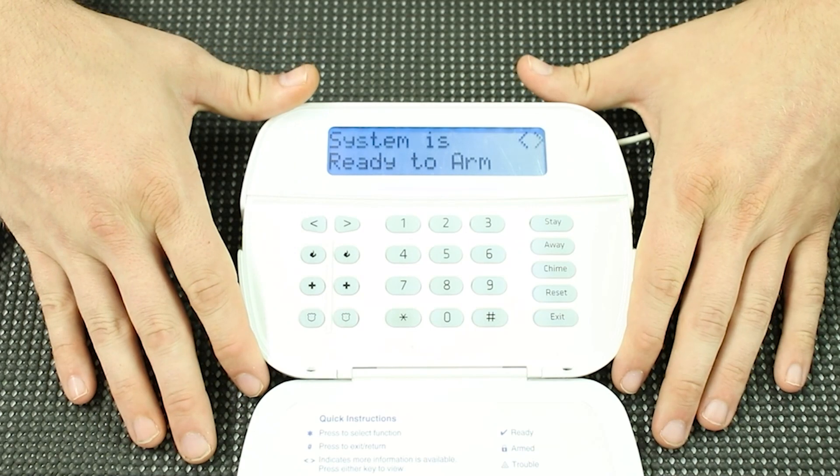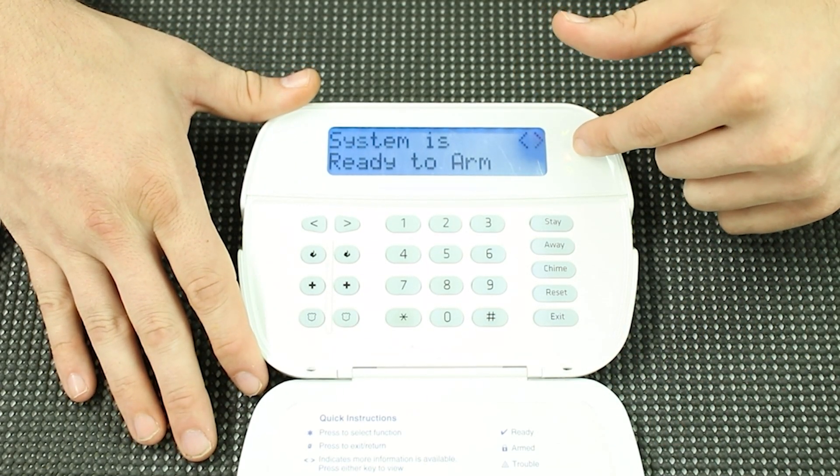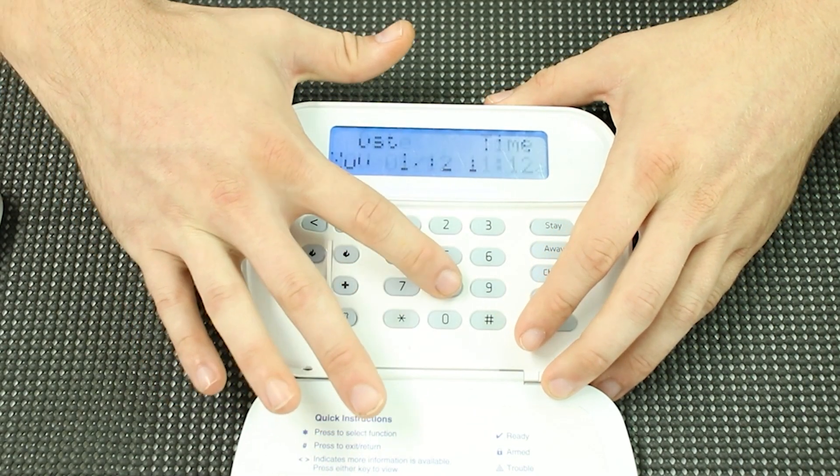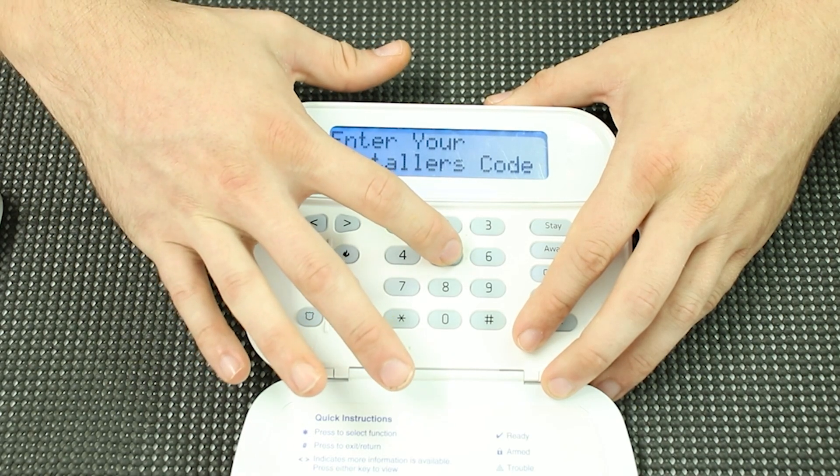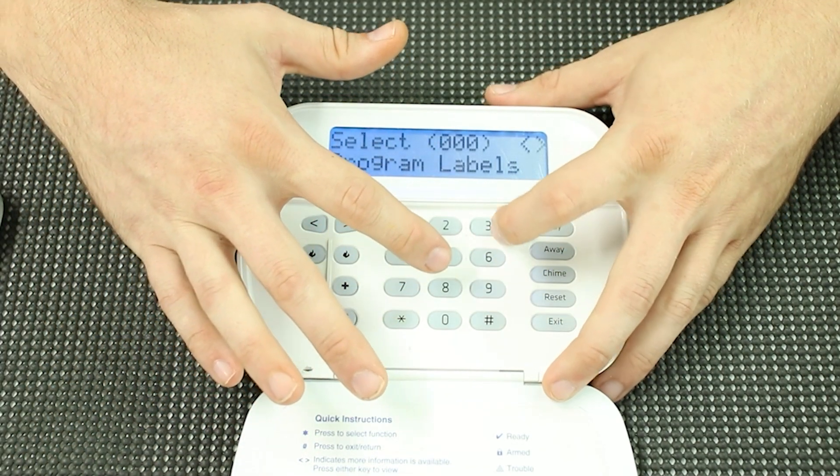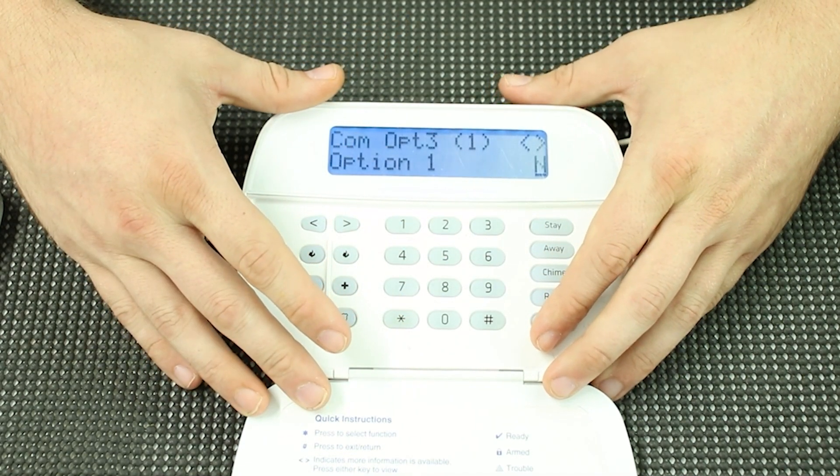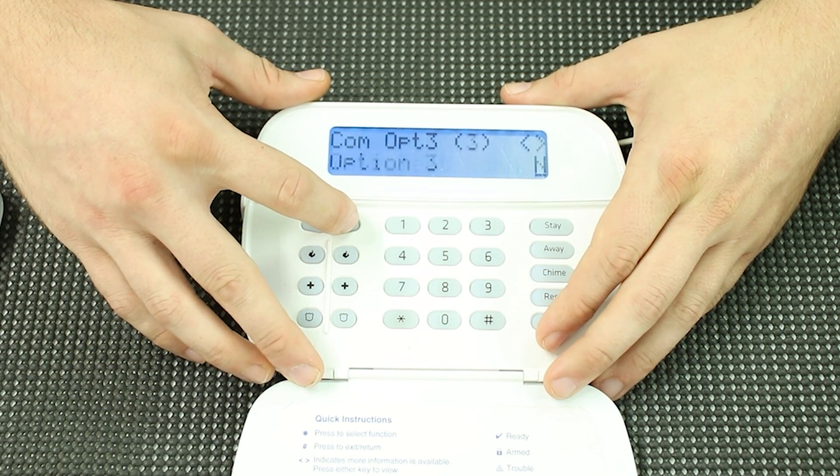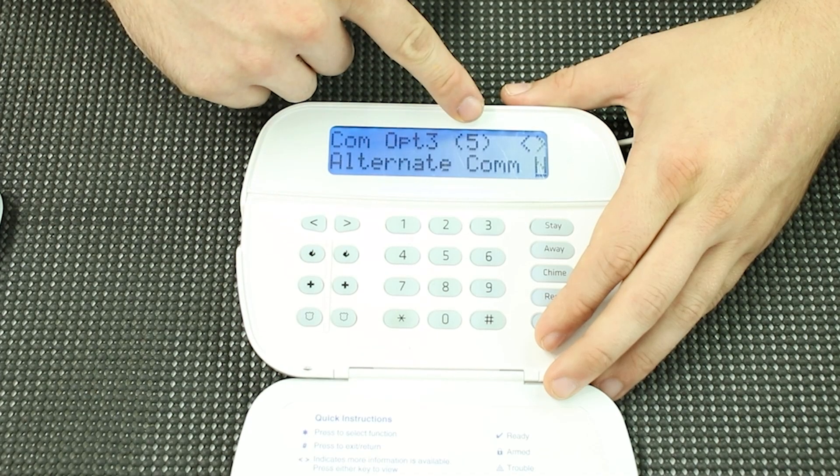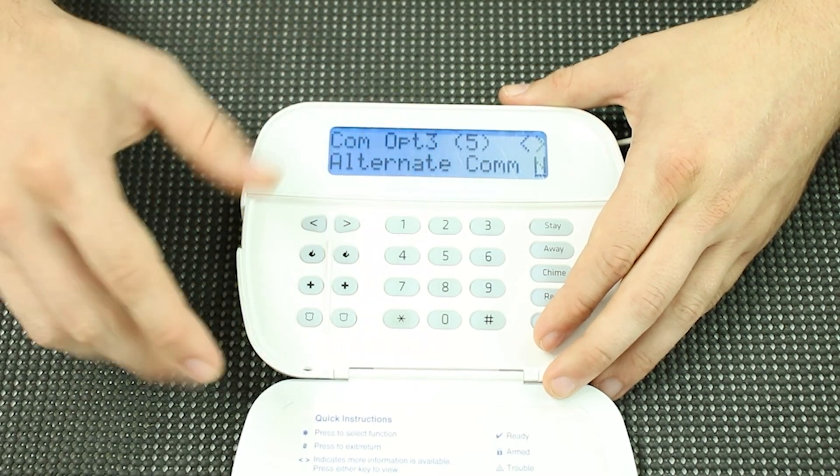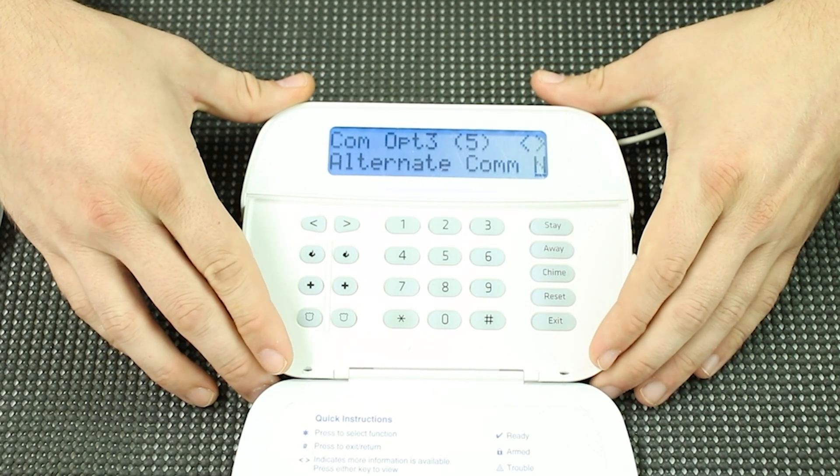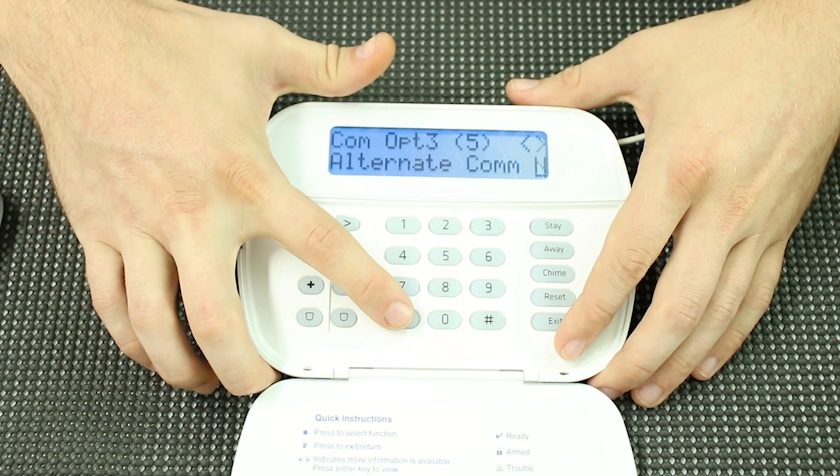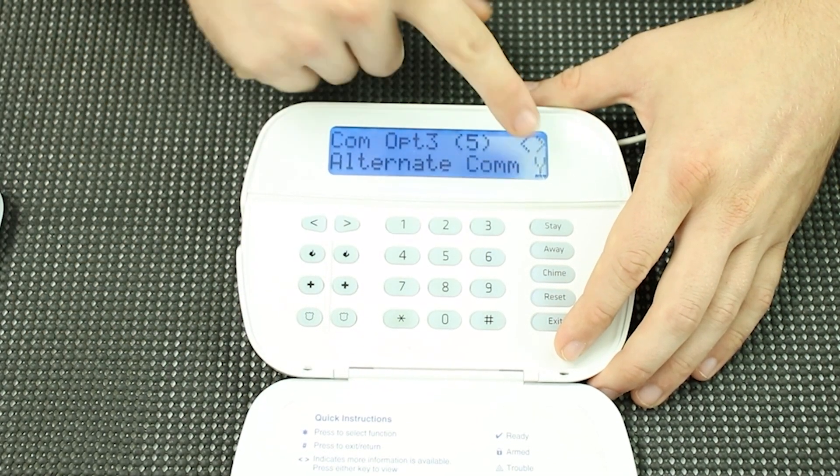Now that the system's loaded up I do have a trouble here. I just don't have a siren hooked up so it's showing a bell circuit trouble. First things first, let's get into programming. So star, eight, installer code, then we are going to go to section 382. There's going to be communication options. Under this section we are going to scroll to the right until we get to option five, that is going to be alternate communicator. That is technically what the TL880 identifies as.